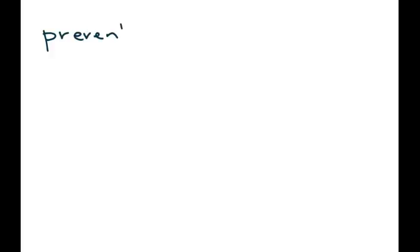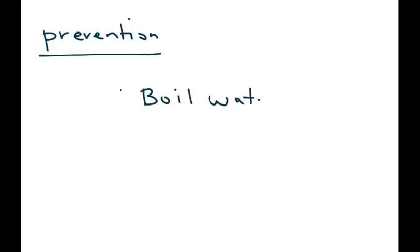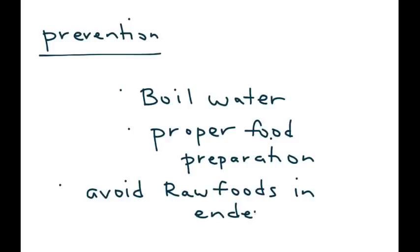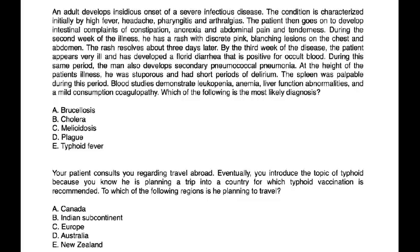Prevention is very important and it's basic: boiling the water you drink and proper food preparation. For those traveling to endemic areas, be careful about what you eat. It's simple advice, but you would be surprised at how ill you can get if you eat the wrong things. Now let's take a look at a couple of vignettes.